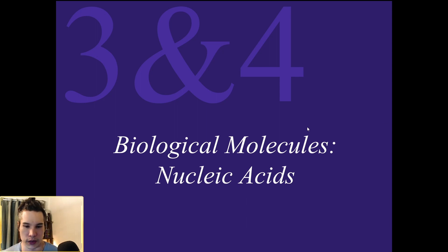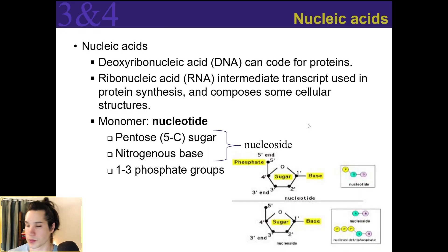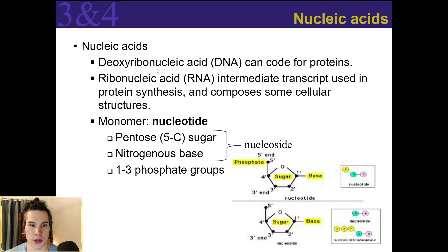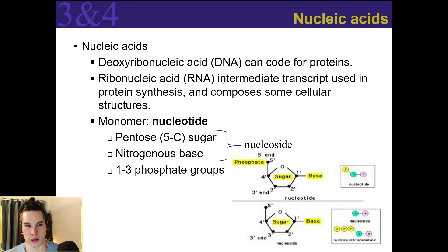Let's talk about nucleic acids. DNA and RNA are two examples — deoxyribonucleic acid for DNA and ribonucleic acid for RNA. These are both types of macromolecules.